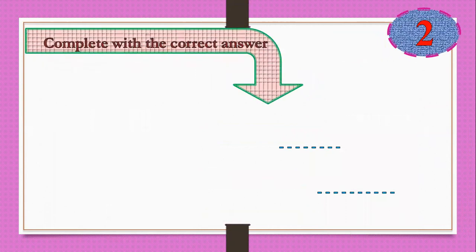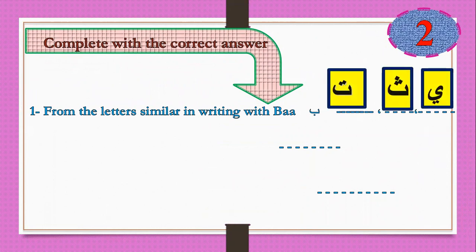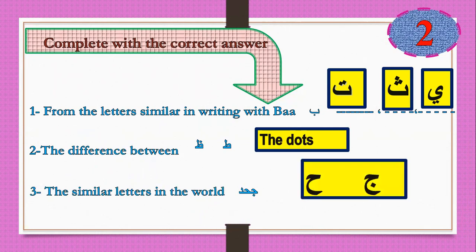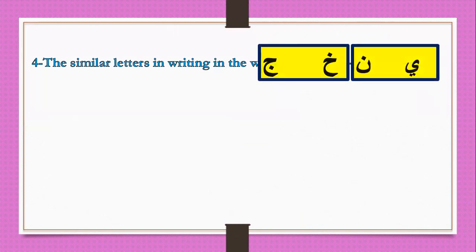Let's go to the second type of questions: complete with the correct answer. Number one: from the letters similar in writing with Ba — yes, Ta, Ha, Tha, and Ya. Number two: the difference between Sin and Za — the dots. Number three: the similar letters in the word Jahadaha — Jim and Ha. The similar letters in writing in the word Yakhrujuna — Ha and Jim, Ya and Nu.